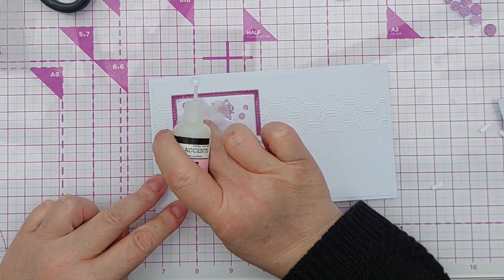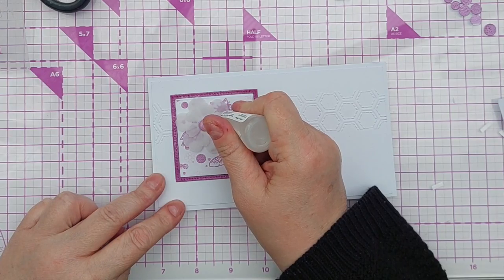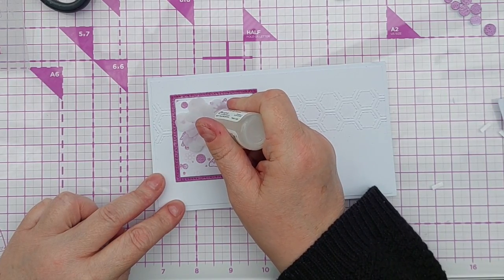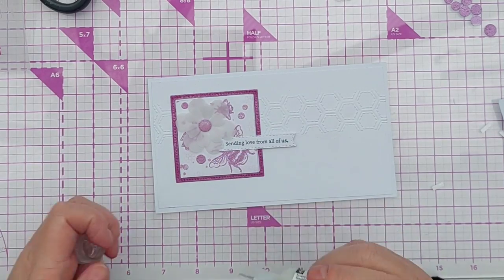To give my flower center a little bit more dimension, I'm just going to add some glossy accents. When that dries, that'll be a nice clear dome on top of that.